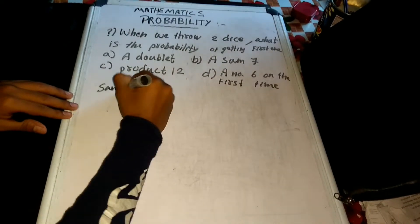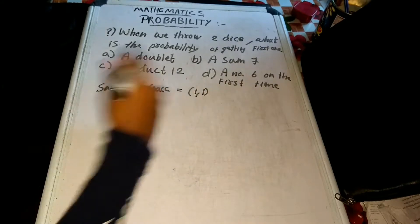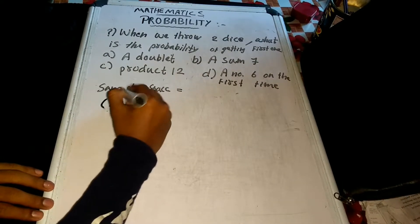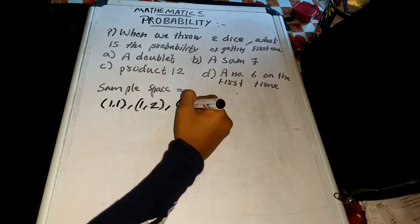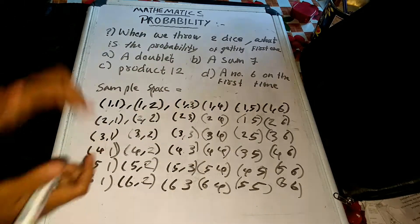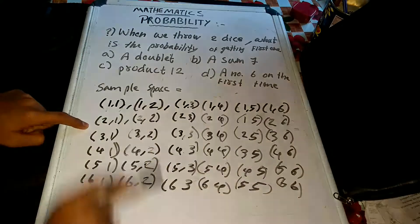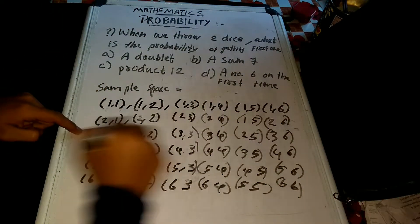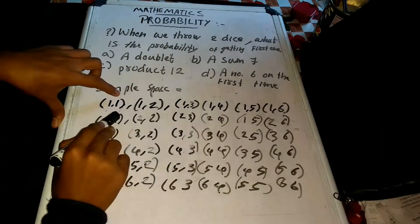So we have to find the sample space. The sample space is very important. We go through 1,1 then 1,2 then 1,3 — completing the sample space. This is 1,1; 1,2; 1,3; 1,4; 1,5; 1,6 and so on for each die value.